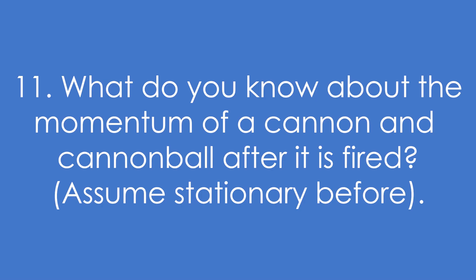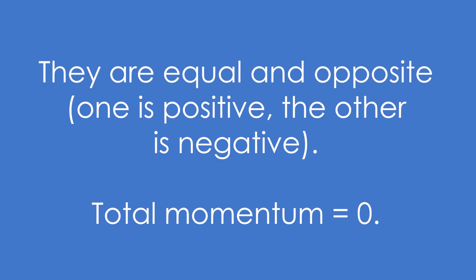11. What do you know about the momentum of a cannon and a cannonball after it's fired? We assume they're stationary before. Their momentums are equal and opposite. One is positive, the other one is negative. The total momentum is zero. That's before and after.